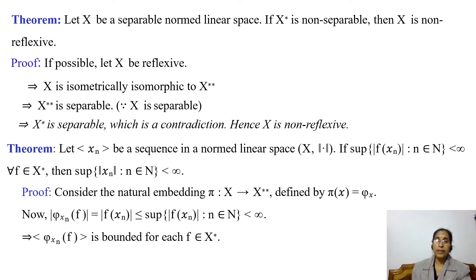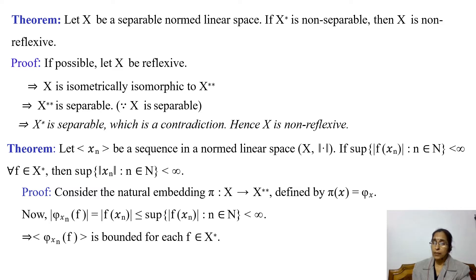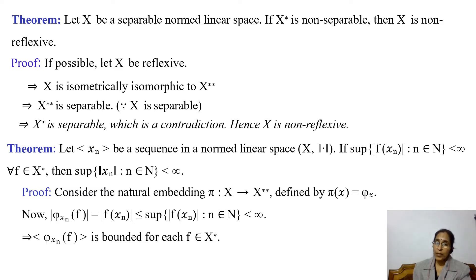The next theorem states: let x be a separable normed linear space. If x* is non-separable, then x is non-reflexive. Let us prove this. We assume to the contrary that x is reflexive, meaning x is isometrically isomorphic to its second dual x**, so x is homeomorphic to x**. Since the homeomorphic image of a separable space is separable, and x is given as separable, x** is also separable.